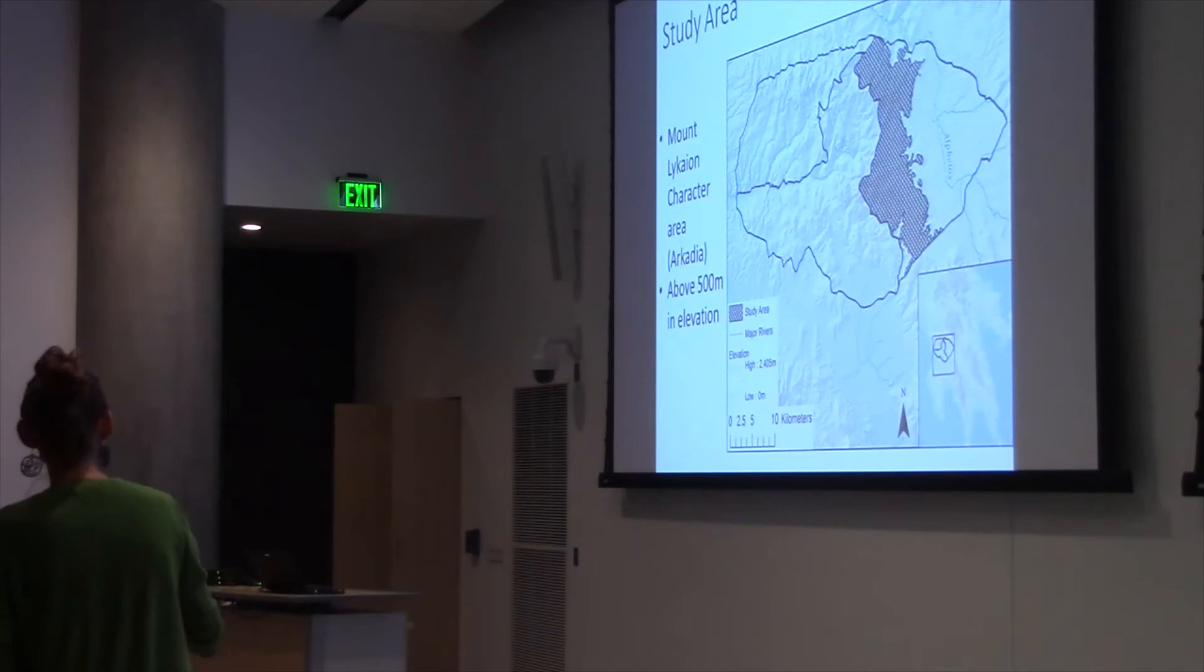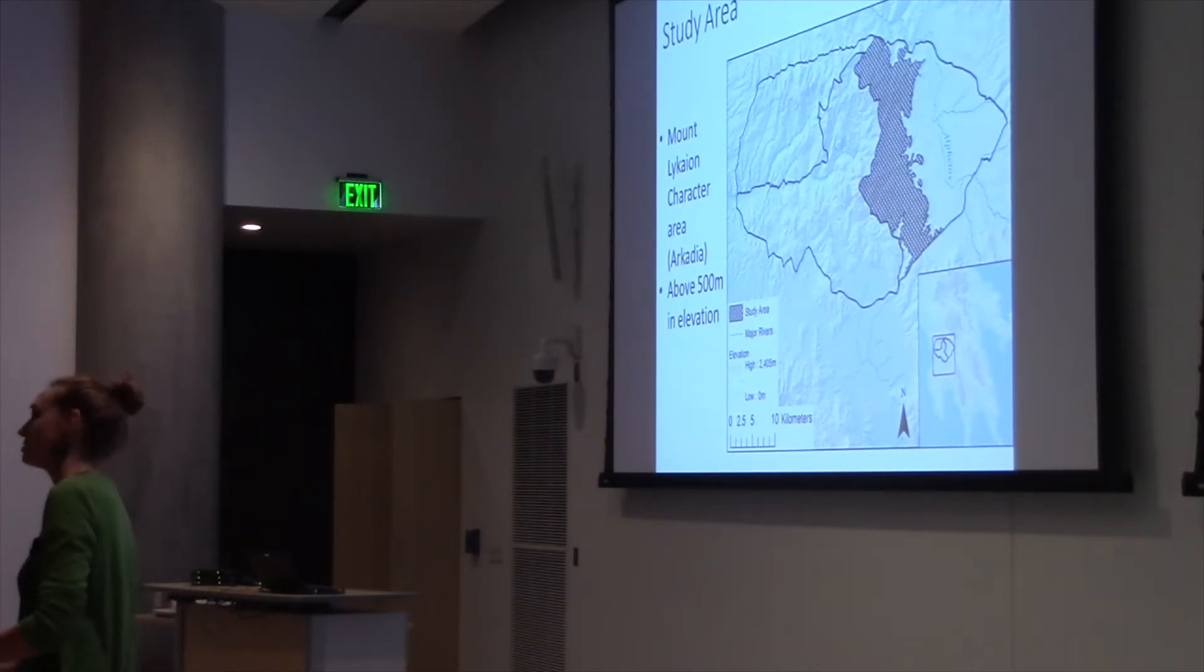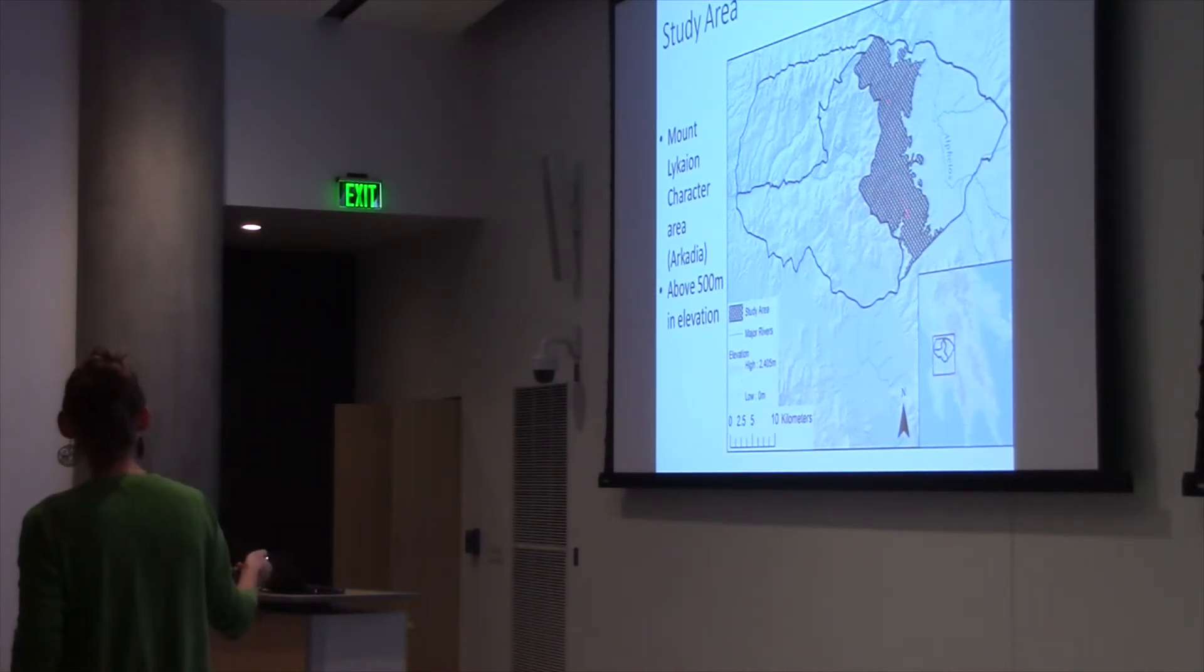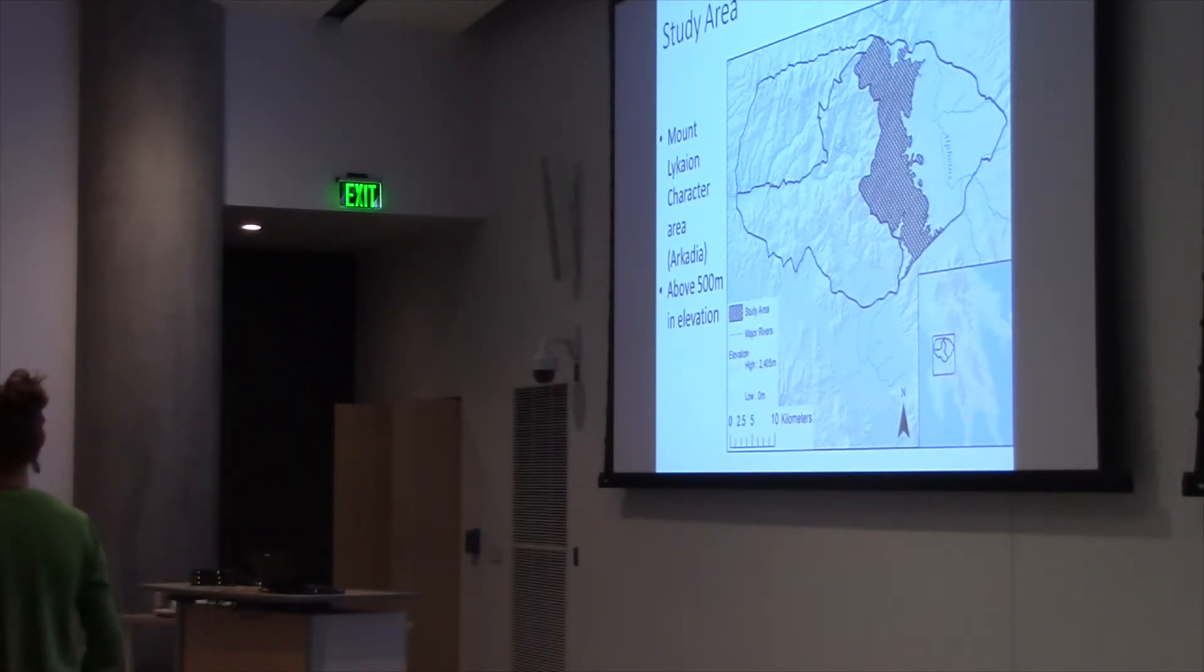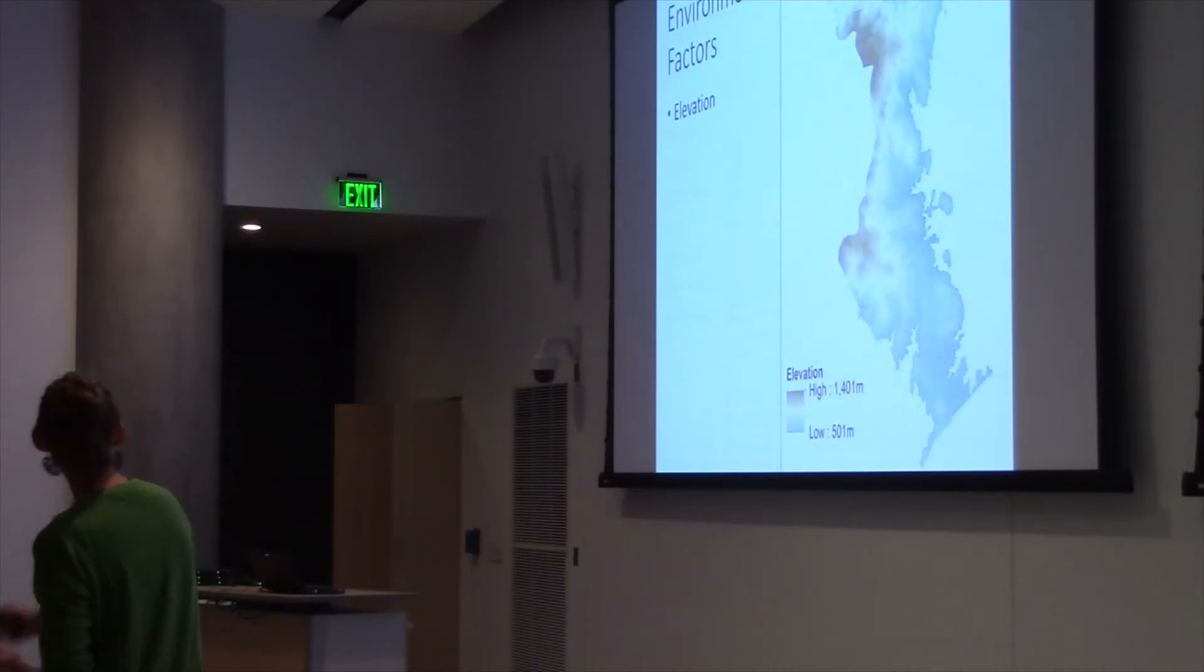I clearly couldn't project all of my walnut parameters onto the entire park. It's over 600 square kilometers. It's about 660 square kilometers. What I decided to do was look at the area within Arcadia that was above 500 meters. That would give me a study area that was manageable, that was sort of ecologically and landscape sort of unified, and that would become my study area. On to my suitability analysis.